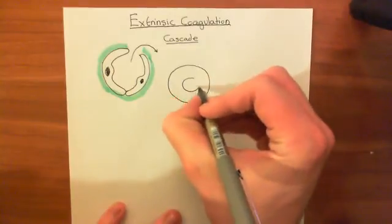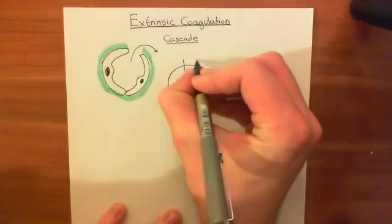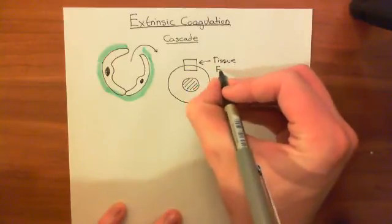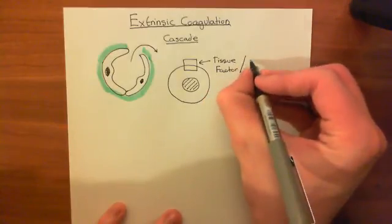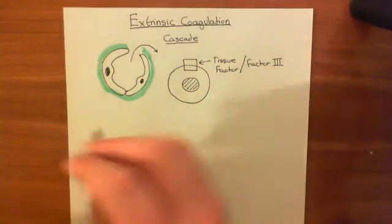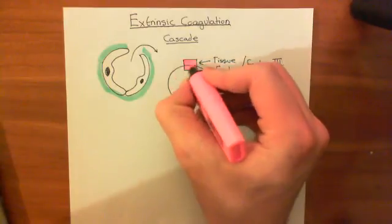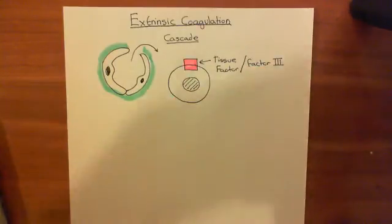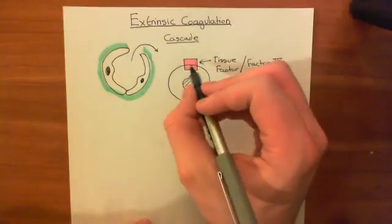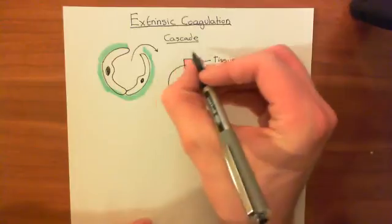In the peripheral tissue we have a somatic cell, and in its membrane is a protein known as tissue factor, also called clotting factor three or just factor three. Tissue factor is the unusual coagulation factor because it only has one state — it's always active. It just doesn't usually do anything because its substrate, factor 7, is not normally in contact with it.